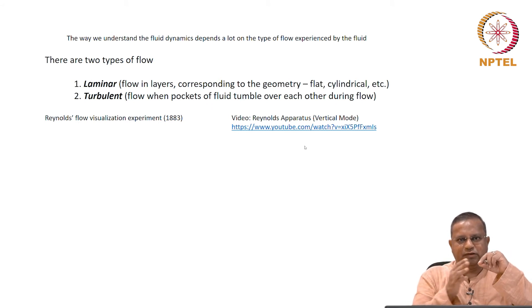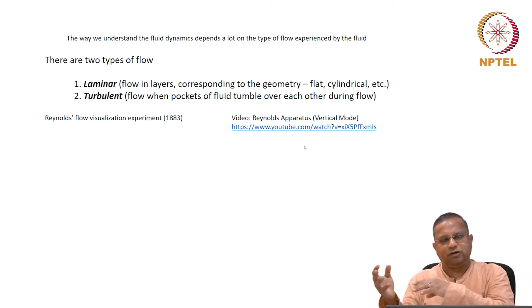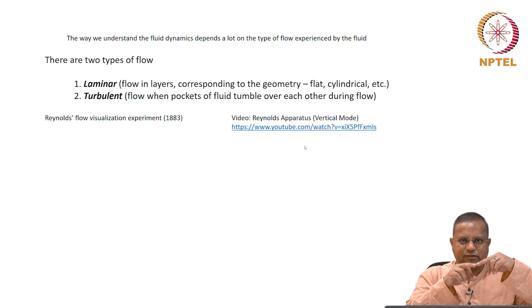As you change the conditions of flow, let's say the velocity changes and the flow moves from laminar to the turbulent region, this dye gets mixed, which shows the intermixing of the various layers of flow, the parallel layers of flow. That is what is shown here. Please watch this video.